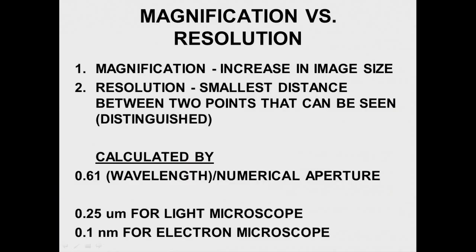Now before we talked about magnification, just increased size of image. Resolution is the smallest distance between two points that can be distinguished. And we talked about the railroad tracks and how you lose resolution as you go down the railroad tracks.